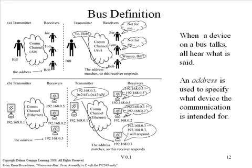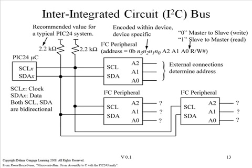The I2C is a bus in its own right, in the sense that each device on the bus has a specific address. As an analogy, every device on the internet has a unique address, which allows you to move data from one computer to another. In order for each chip to possess its own address, we need to be able to physically tell a specific chip what its address is. And you can see that capability provided here on this chip — three external connections actually determine the address of that chip.